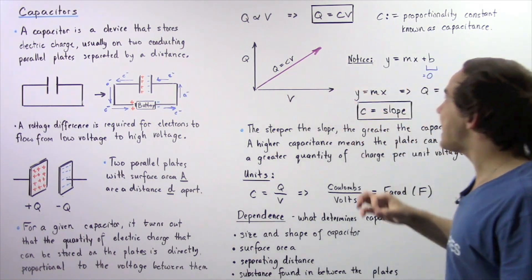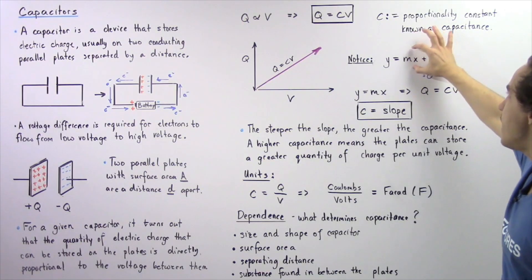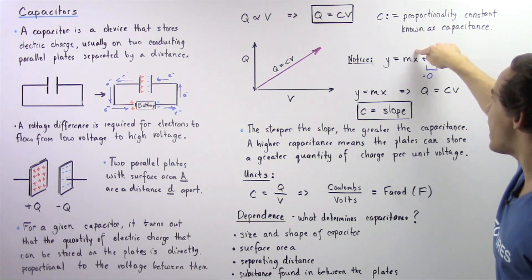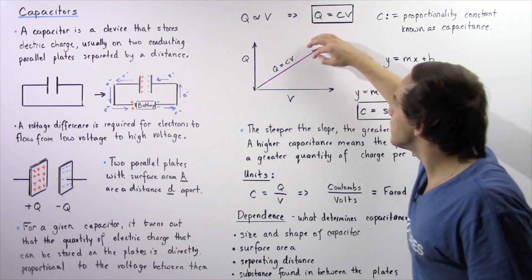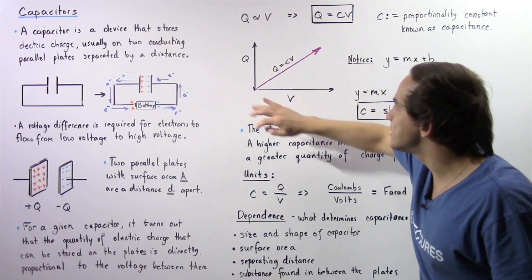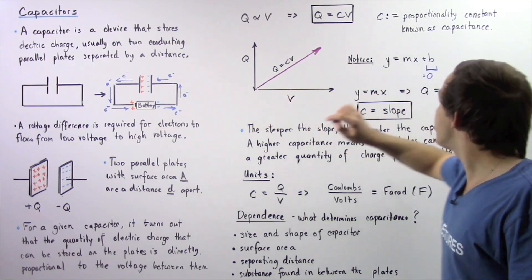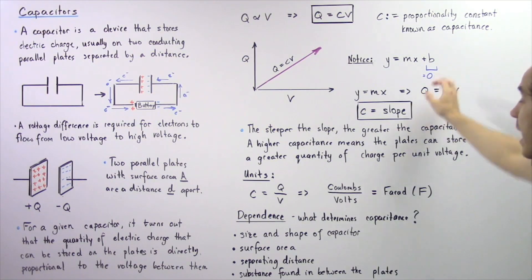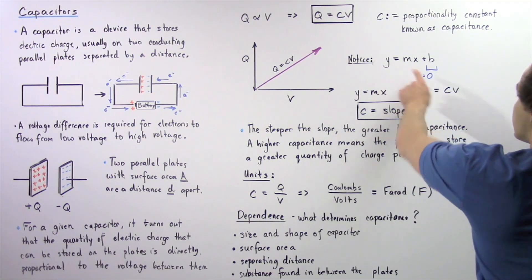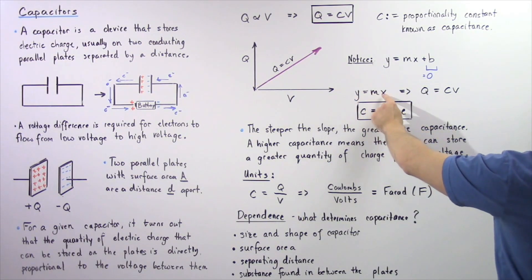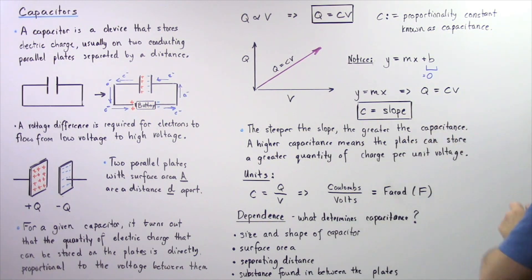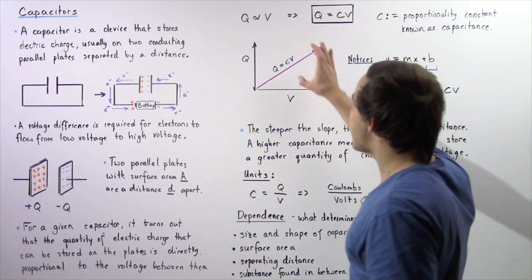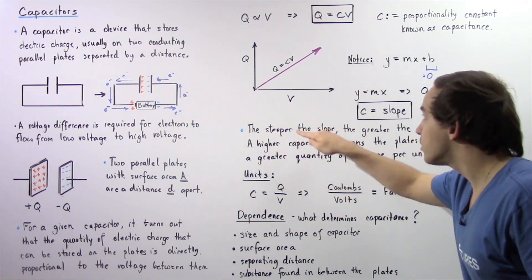This is a linear equation of the form Y = MX + B. In our case, the Y-intercept B is zero, so the equation becomes Y = MX, which matches Q = CV. Here, C is our slope — it represents the capacitance. The steeper the slope, the greater the capacitance, because a larger C value means more charge is stored per unit voltage.